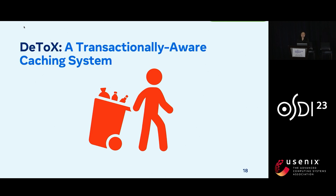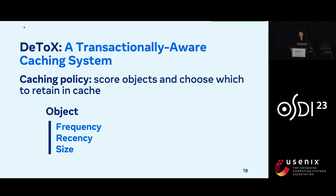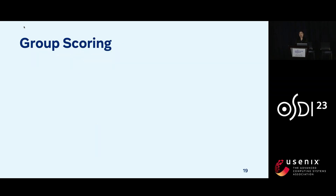We're now ready to put this all together and introduce Detox, a transactionally aware caching system. The core component of Detox is its caching policy, an algorithm that scores objects and chooses which to retain in cache. Previous work around caching policies has focused on using individual object features such as frequency, recency, and size to make caching decisions, and we use the corresponding group features. I'll give a high-level overview of how we do group scoring, focusing on group frequency, with more details in our paper.